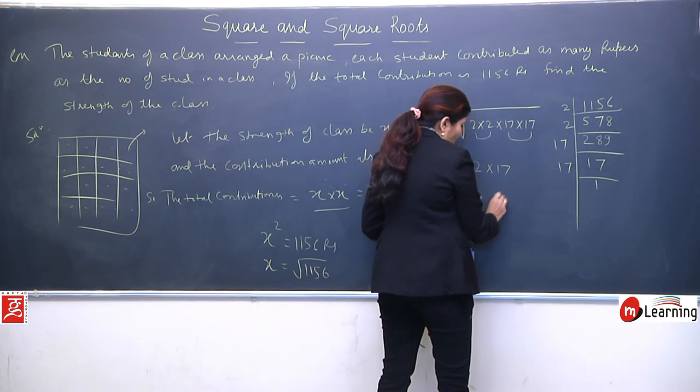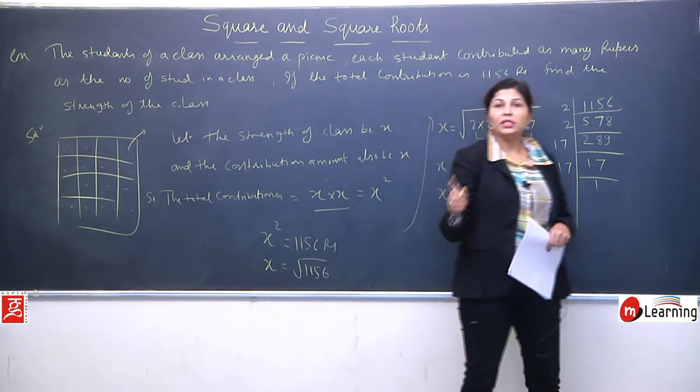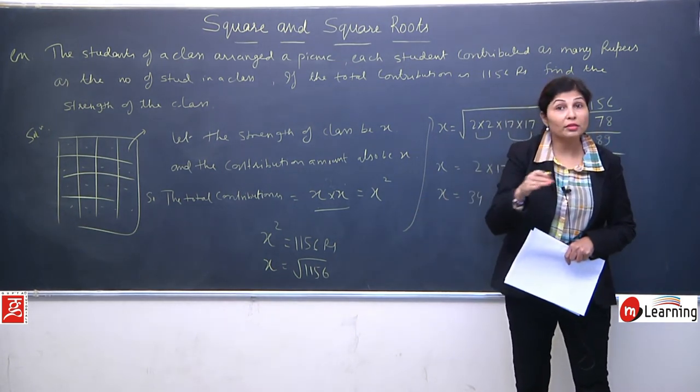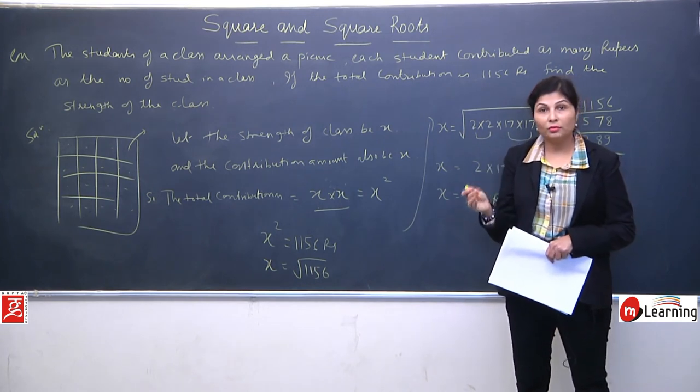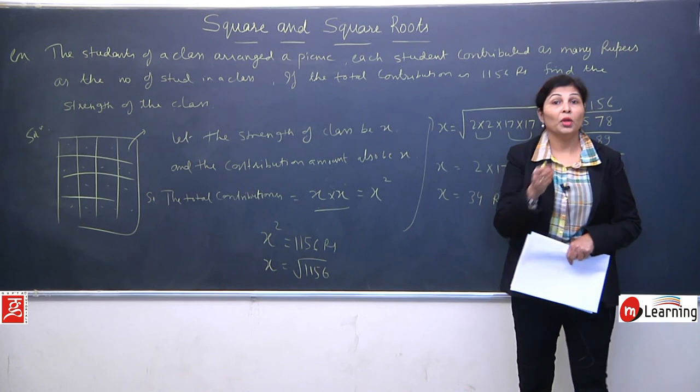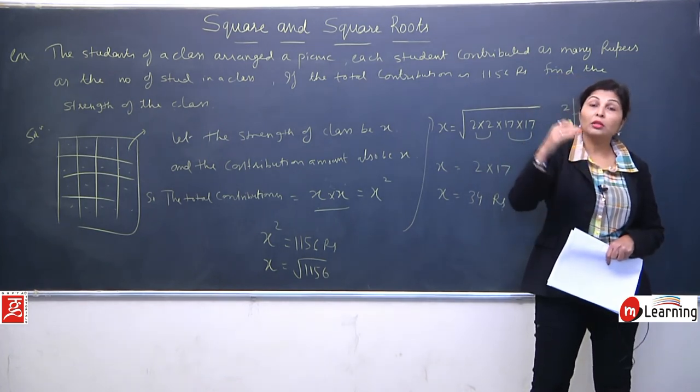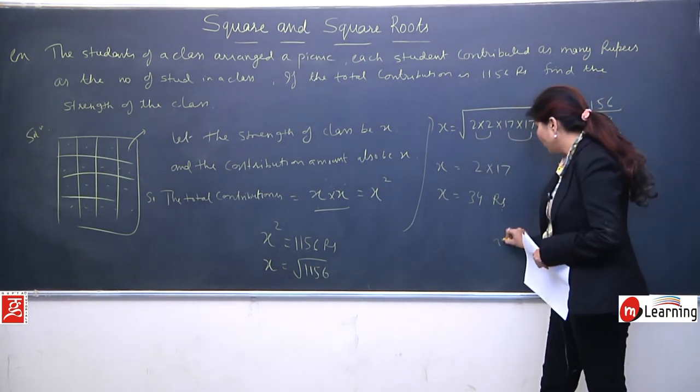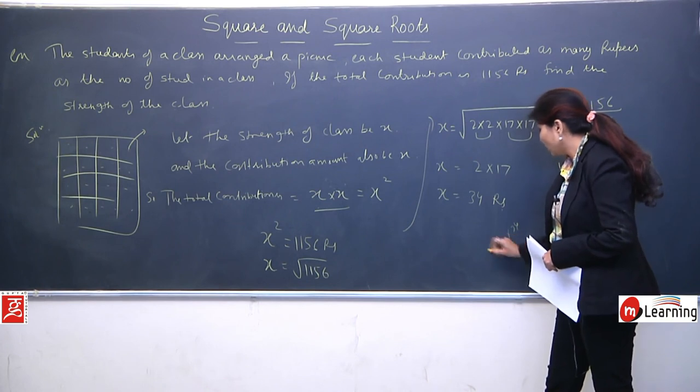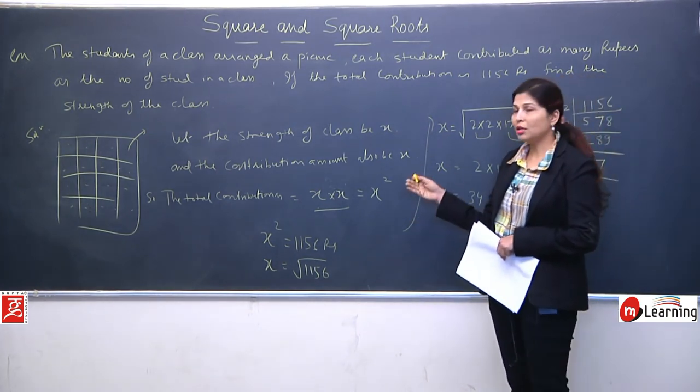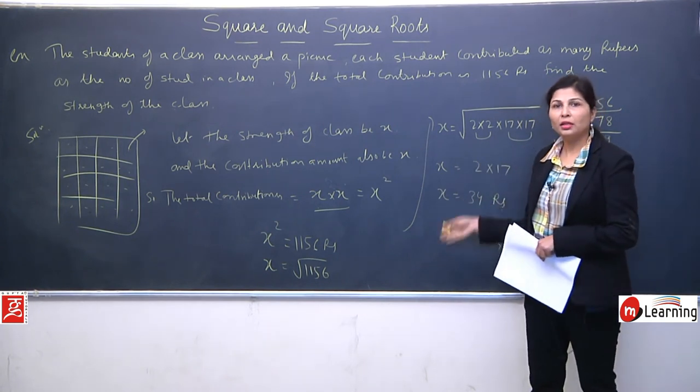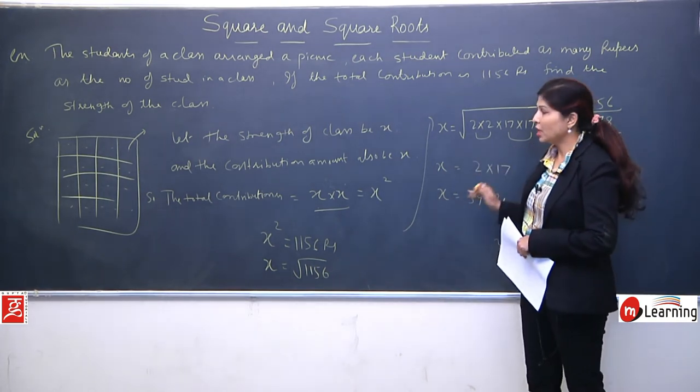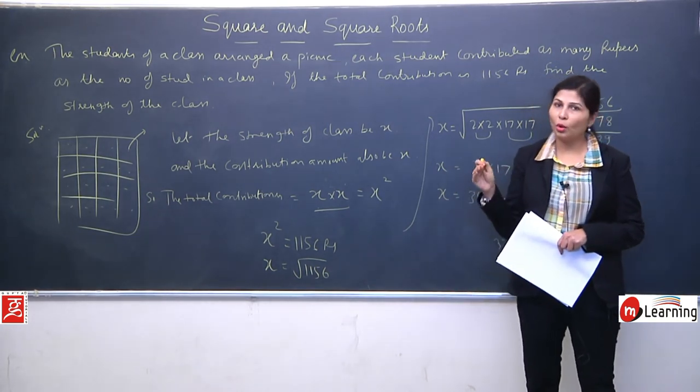So 2 times 17 is 34 rupees. Means each and every student is giving 34 rupees, and the number of students is also 34. Because first student gave 34, second student gave 34, third student gave 34, and similarly 34 students gave 34 rupees. 34 into 34 will be equivalent to 1156. Means in this class there are 34 students, and they are contributing 34 rupees per person. So this is a very good example. You should practice this type of example. Thank you very much.